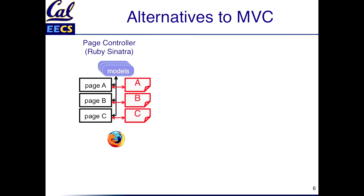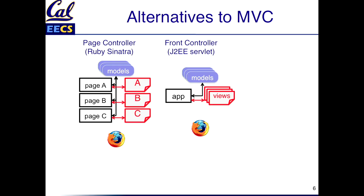If you don't do model view controller, are there other ways to organize a web app? One possibility is a page controller, which means pretty much every page the user could view has a controller associated with it. If you've got an app that just does a few simple fixed actions, this might actually be an easier design. There's also the front controller, which is the way J2EE servlets work — basically one master dispatcher that everything comes through, with logic that might talk to a bunch of different classes beyond that point, acting as a central bottleneck that makes decisions and makes data available for presentation through views.